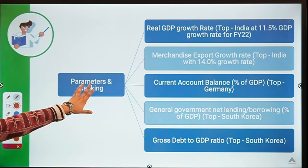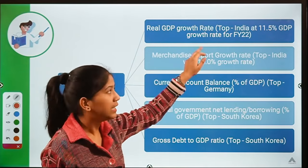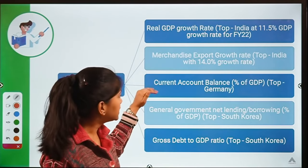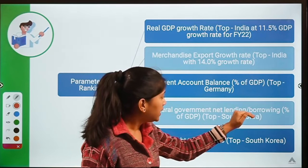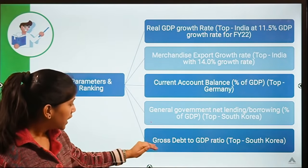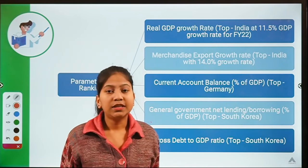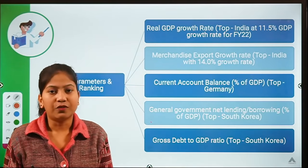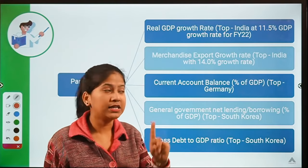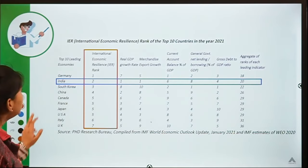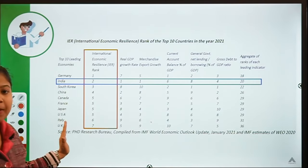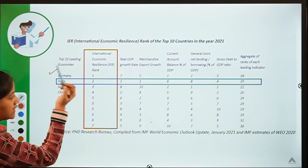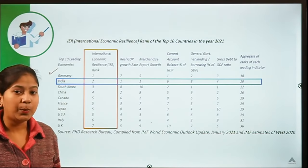The parameters of this ranking are: (1) real GDP growth rate, (2) merchandise export growth rate, (3) current account balance, (4) general government net lending or borrowing as a percentage of GDP, and (5) gross debt to GDP ratio. These five economic parameters assess the economic resilience of a country. In this picture you can see the top 10 leading economies — Germany is at rank one.